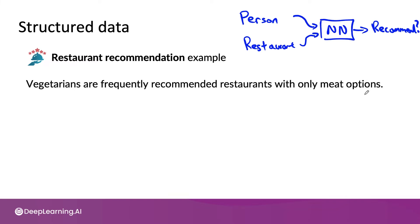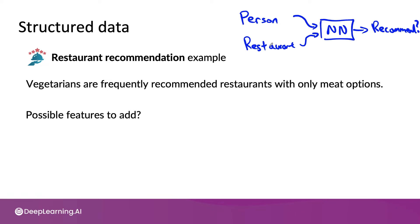I didn't know how to synthesize new examples of users or new examples of restaurants, because this application had a fixed pool of users and there were only so many restaurants. So rather than trying to use data augmentation to create brand new people or restaurants to feed to the training set, I thought it was more fruitful to see if there were features to add to either the person inputs or to the restaurant inputs.